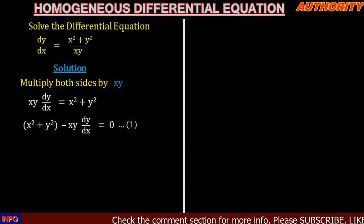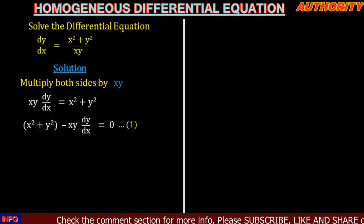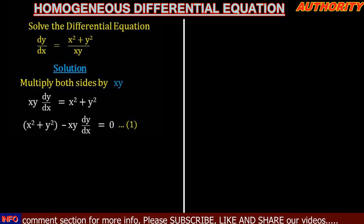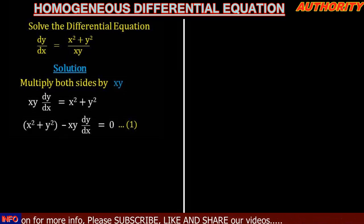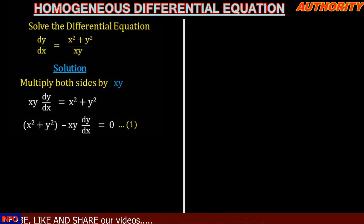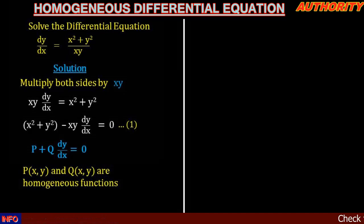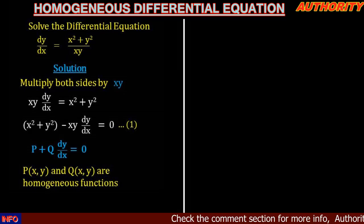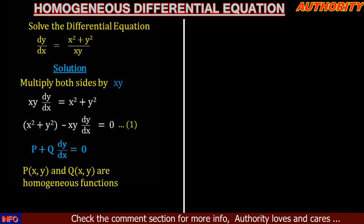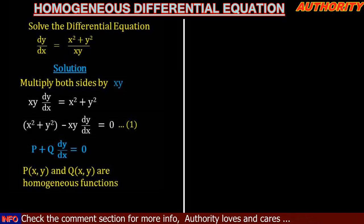So arranged in this form we have (x squared plus y squared) minus xy dy/dx equals zero. Let's call this equation one. We remember there is an equation called the homogeneous differential equation, which looks like P plus Q dy/dx equals zero, where P and Q are homogeneous functions.